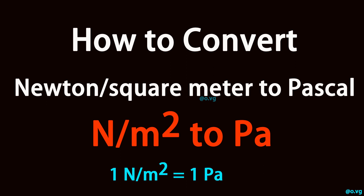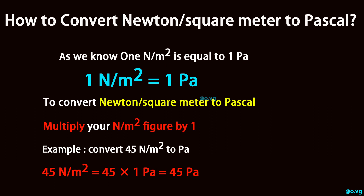How to convert newton per square meter to pascal. As we know, 1 newton per square meter is equal to 1 pascal. To convert newton per square meter to pascal, multiply your newton per square meter figure by 1.